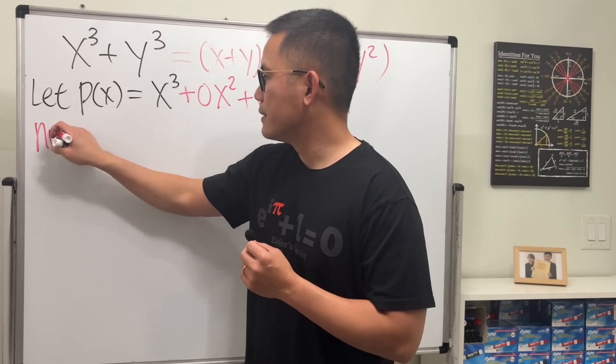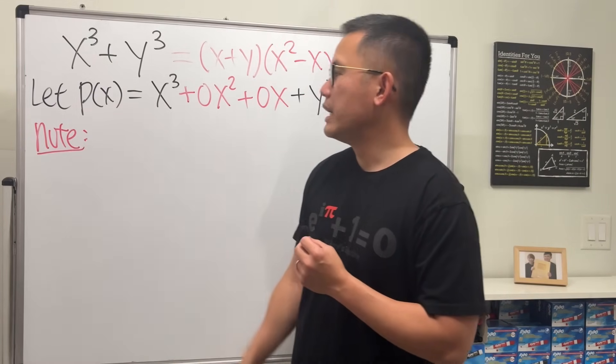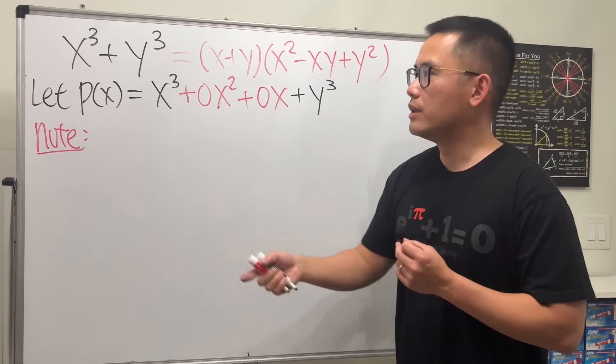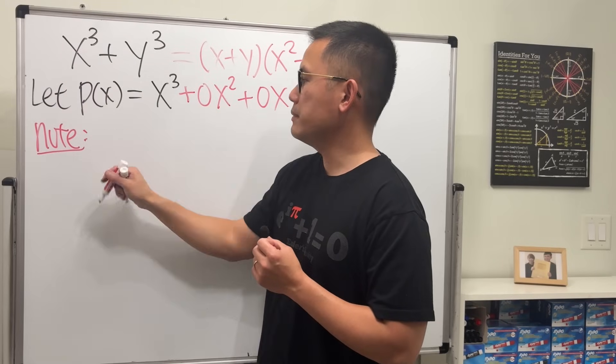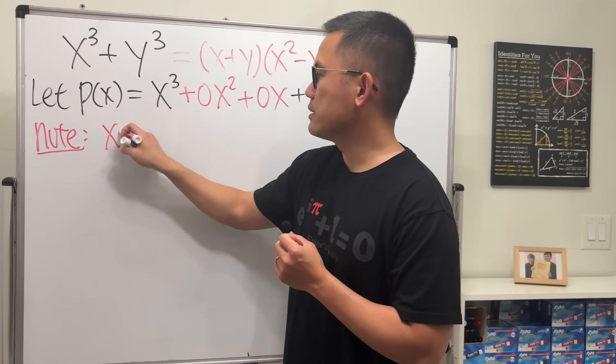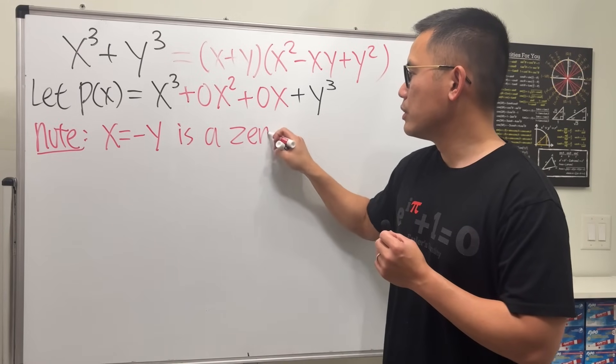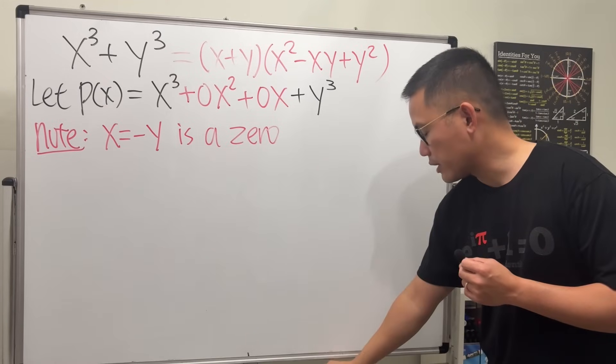Now, note that if I plug in negative y, and this is what you can do. Just check it out, right? Just plug in negative y. So just write x equal to negative y is a zero to this polynomial, because, let me just write this down here.